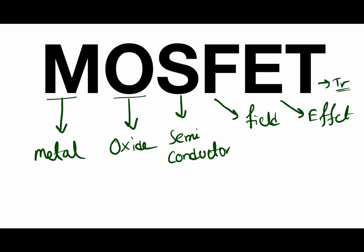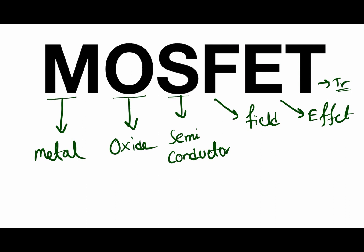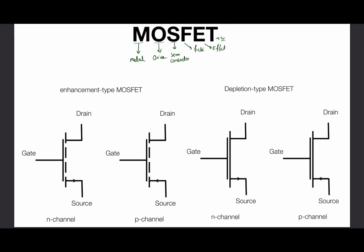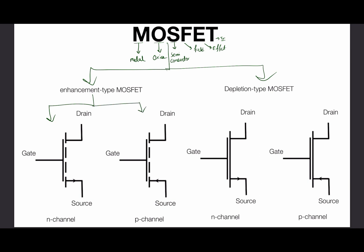In the introduction, we will look at the types of MOSFET. We have typically two types: one is the enhancement type MOSFET and the other is the depletion type MOSFET. These are the symbols for the different types. In the enhancement type, we have two MOSFETs — one is the N-channel enhancement type and another is the P-channel enhancement type.